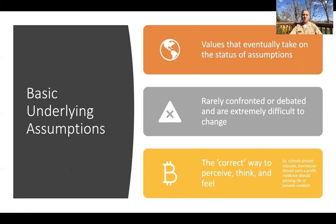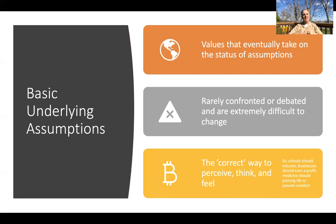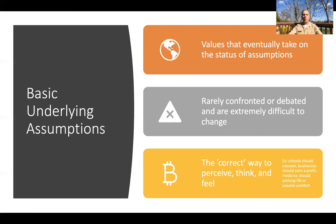Some companies may have a basic underlying assumption that physical fitness is a core part of being an officer and is more important than anything else, while other companies may not have that underlying assumption. These are the hardest things to figure out. We can observe some artifacts, get some ideas, ask people and start to get an idea of organizational values. Even deeper than that are these underlying assumptions, because people may not even be able to talk about what they are — they're not confronted or debated because they're just never talked about. But they do inform how people behave, providing assumptions that drive the correct way to perceive, think about, and feel about a situation.